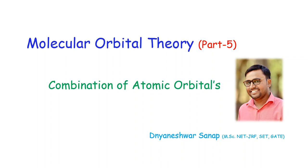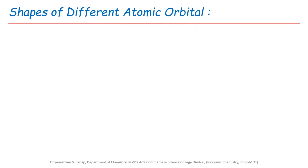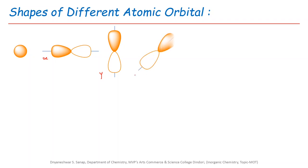Let us start today's topic, i.e. the combination of different types of atomic orbitals. Before we start, we have to understand the different types of atomic orbitals and their shapes. First is the S orbital, which is spherical in nature. The P orbital has a dumbbell shape along the x-axis, y-axis, and z-axis.